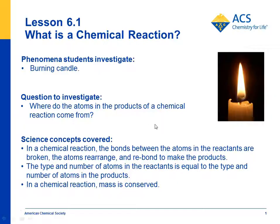The big science concepts covered are: in a chemical reaction, the bonds between the atoms in the reactants are broken, the atoms rearrange, and then rebond to make the products. And the type and number of atoms in the reactants is equal to the type and number of atoms in the products, which means that in a chemical reaction, mass is conserved.